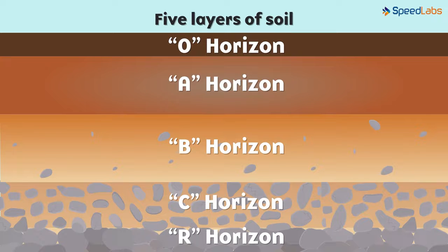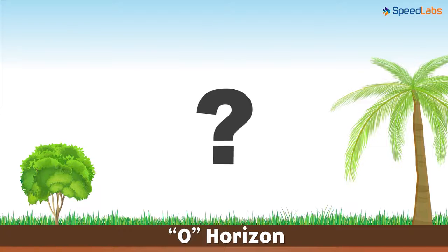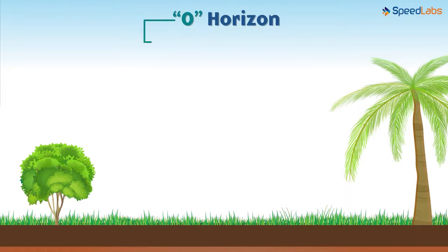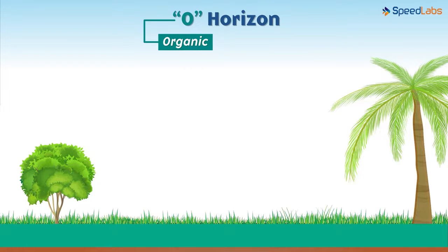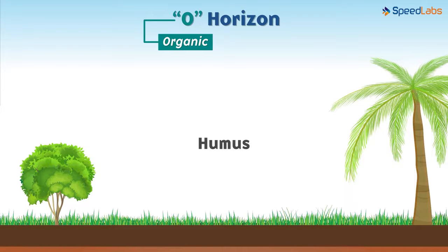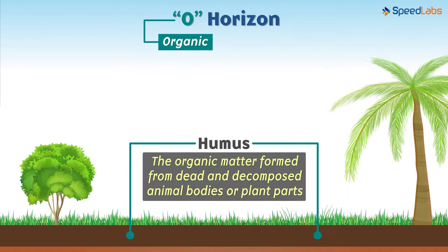The first layer is the O horizon. Why does the series begin with O? Well, here O literally means organic, so this layer is basically composed of organic matter. Humus is the organic matter formed from dead and decomposed animal bodies or plant parts. The presence of humus makes this layer appear very dark in colour, and the presence of organic matter makes this layer rich in nutrients.